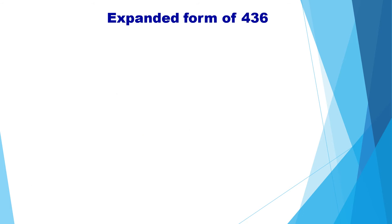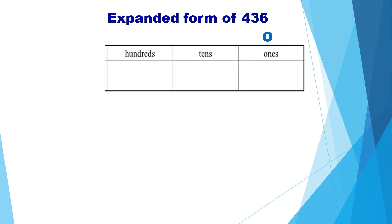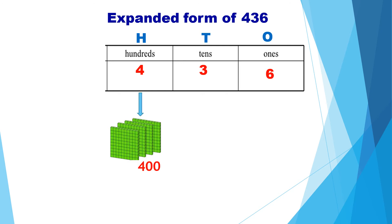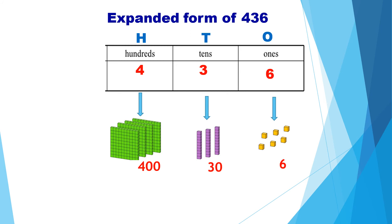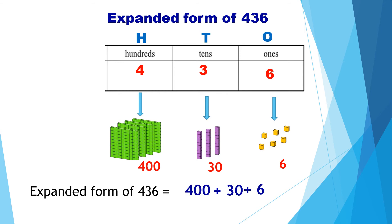Let us see one more example. We will write the expanded form of 436 using the place values — ones, tens, and hundreds. We have four hundreds, three tens, and six ones. Four hundreds: the value is 400. Three tens: the value is 30. And the ones place is six, so the place value is 6. Therefore, the expanded form of 436 is 400 plus 30 plus 6.